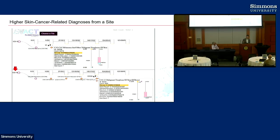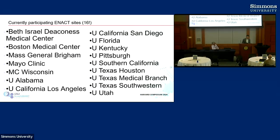I put this slide in because it shows a real example of a data outlier issue that is not actually a quality problem, but does highlight a real difference in the data. This is a site in a place where it's sunnier than it is here, and they have a higher than average percentage of patients with skin cancer.